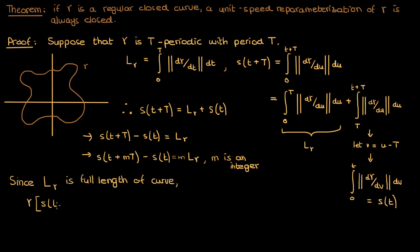And since we end up at the same value of gamma when we go a full length around the curve, we can say that gamma at an arc length value of S of t plus M times capital T is the same as the value of gamma at an arc length of just S of t, since we've only gone around an integer number of times around the curve and we end up back at the exact same point.